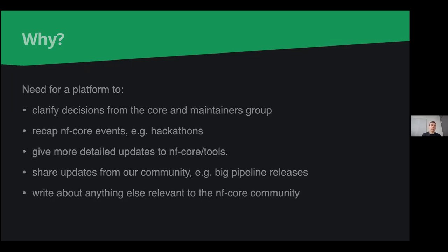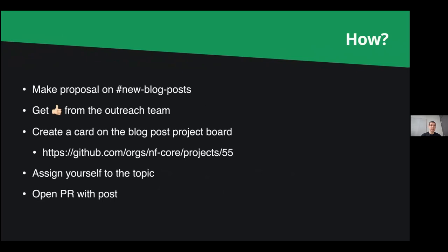How do you add stuff to the blog? Similar to how you propose a new NFCore pipeline, you make a proposal in the new-blog-posts Slack channel — you don't have to provide a tube map, just write down what you'd like. Then if you get some thumbs up, you make a card on the blog post project board on GitHub, assign yourself to the topic, and open a PR.